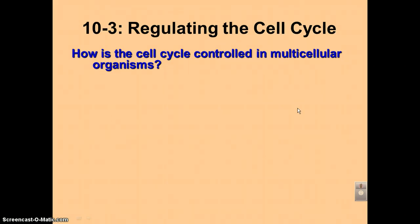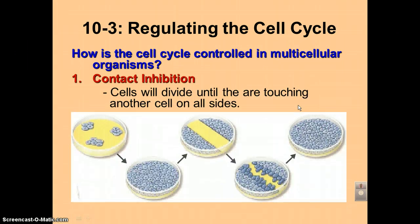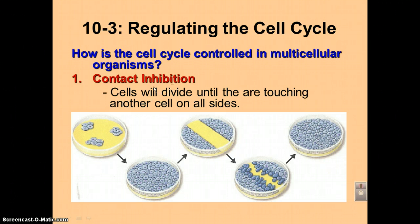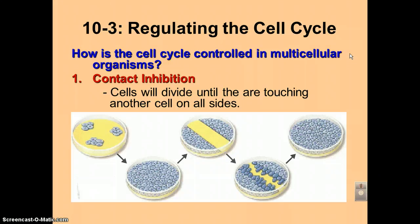The first control mechanism is one of the most simple, and it's called contact inhibition. The word inhibition means to stop. Basically, when a cell is touching another cell, it will stop dividing. This is a key feature in multicellular organisms, and we see this come into play whenever we have a cut on our finger.